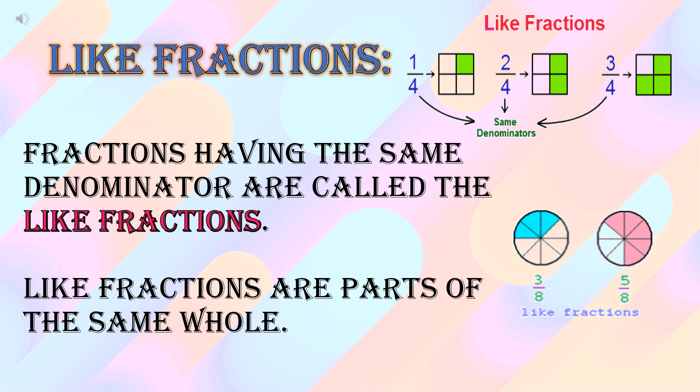Suppose your mamma has made a pizza and she divides it into four equal parts. When you consider one part, it will be one fourth. If you consider two parts, it will be two fourths. If you consider three parts, it will be three fourths. But in sub conditions mein, denominators aapke same hain.